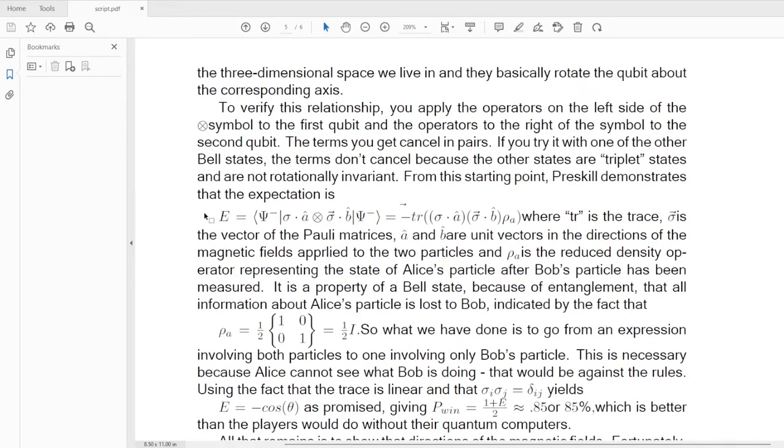From this starting point, Preskill demonstrates the following. This expectation value. Where TR is the trace, the sigma with the vector arrow above it is a vector of the three Pauli matrices. A and B are unit vectors in the directions of the magnetic fields. And Rho sub A is the reduced density operator representing the state of Alice's particle after Bob's particle has been measured. Now it is a property of a Bell state, any Bell state, because of entanglement, that all information about Alice's particle is lost to Bob. Indicated by the fact that Rho sub A is equal to one-half times the identity.